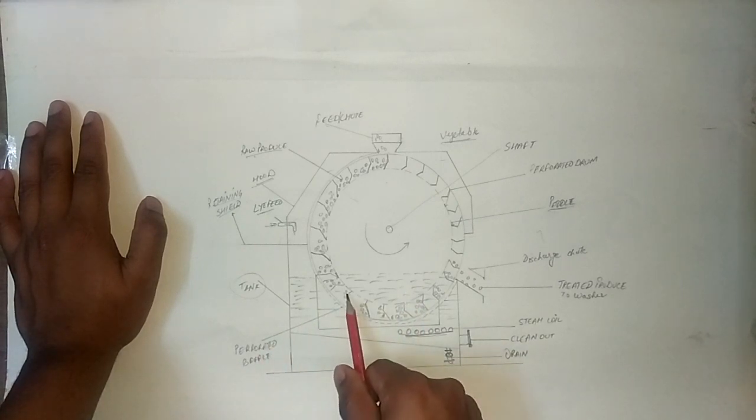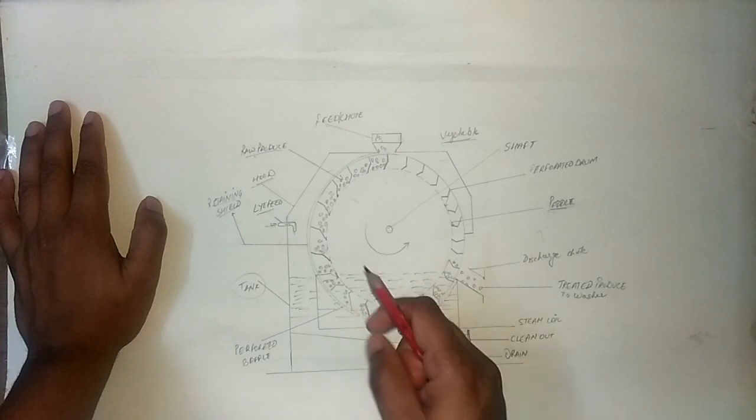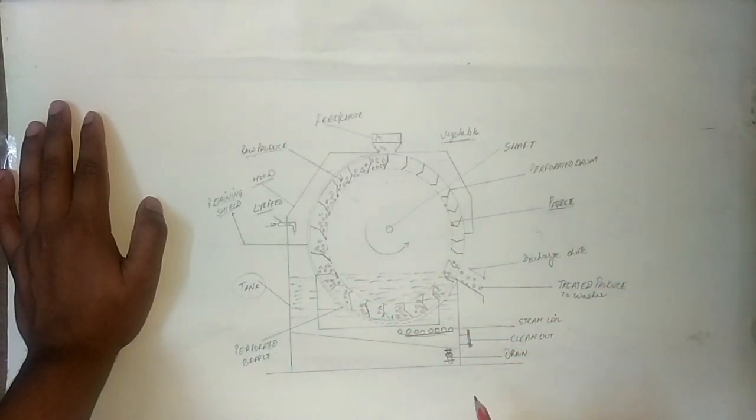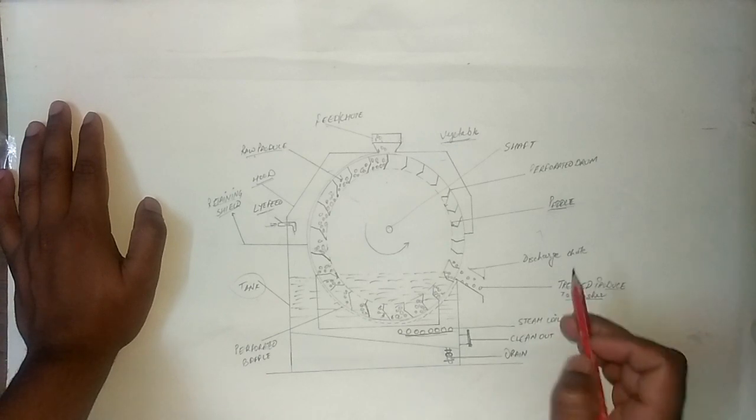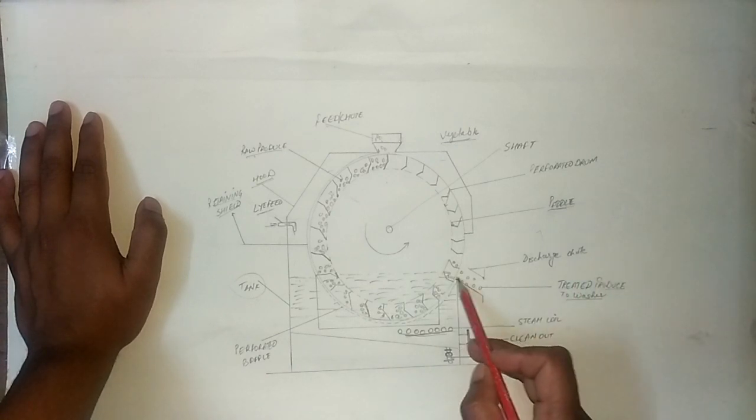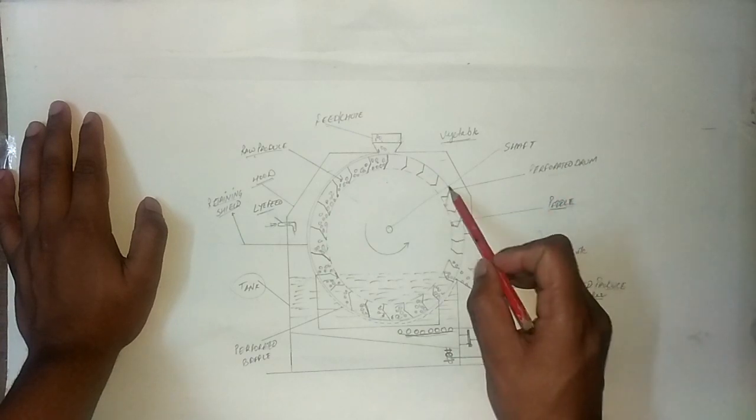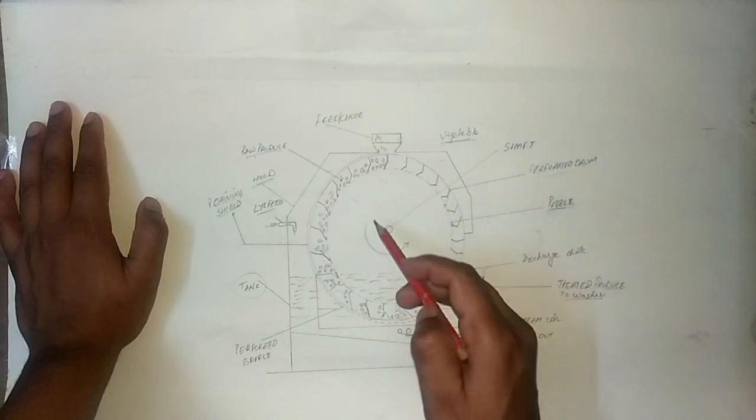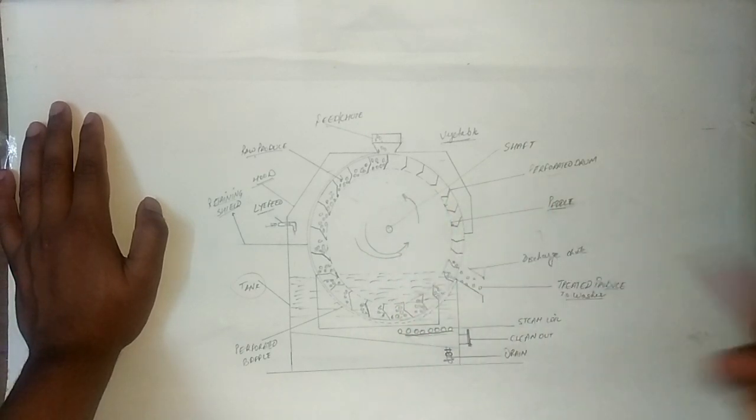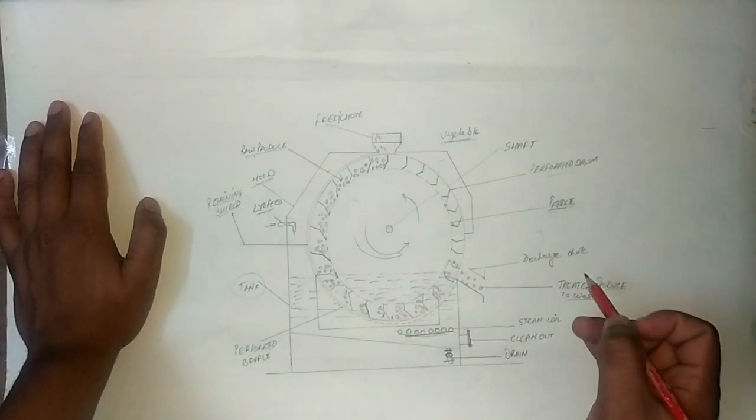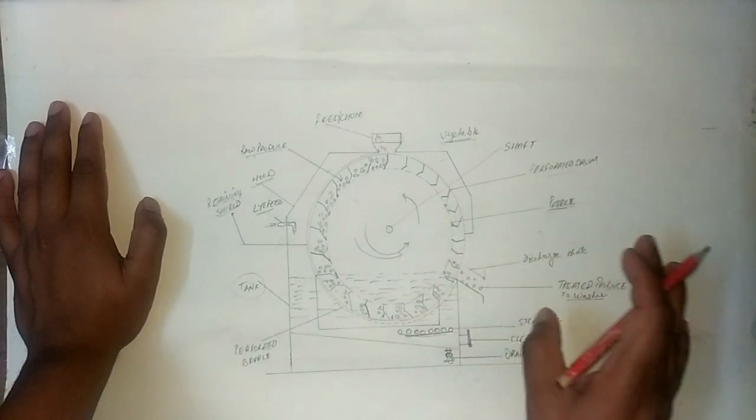You can see the perforated baffle here. We use clean steam coil and treated. We use a perforated drum. This is a simple component.